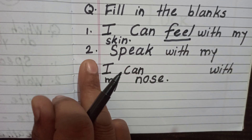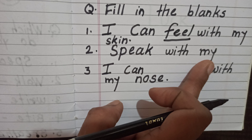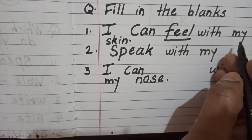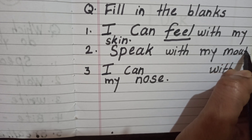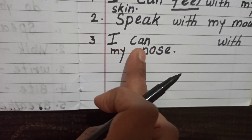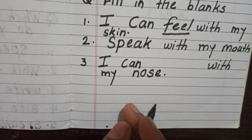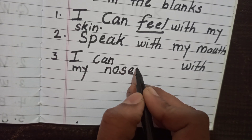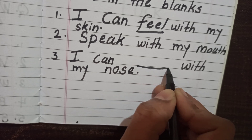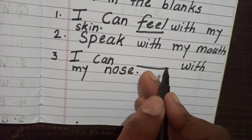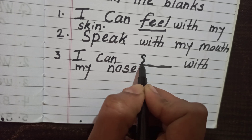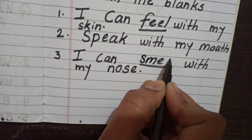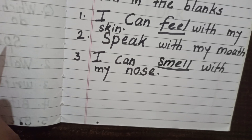Fill in the blanks again: I can ___ with my skin — feel. I can speak with my mouth — M-O-U-T-H. I can ___ with my nose — smell. When your teacher gives you this type of question, on one line you write smell — S-M-E-L-L.